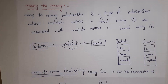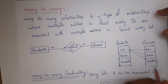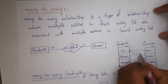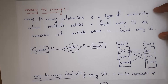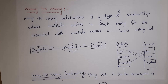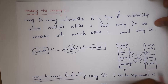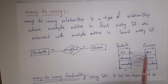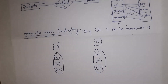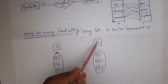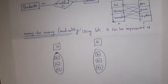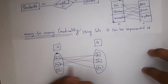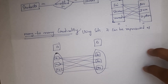Next is many-to-many relationship — many students will select multiple courses. For example, Suresh selected C++, Java and Python, and multiple students like Suresh, Shiva and Ramesh all selected C++. Many-to-many relationship is a type of relationship where multiple entities in the first entity set are associated with multiple entities in the second entity set. We represent this using sets: A represents the student entity set and B the course entity set, with each person selecting multiple courses.